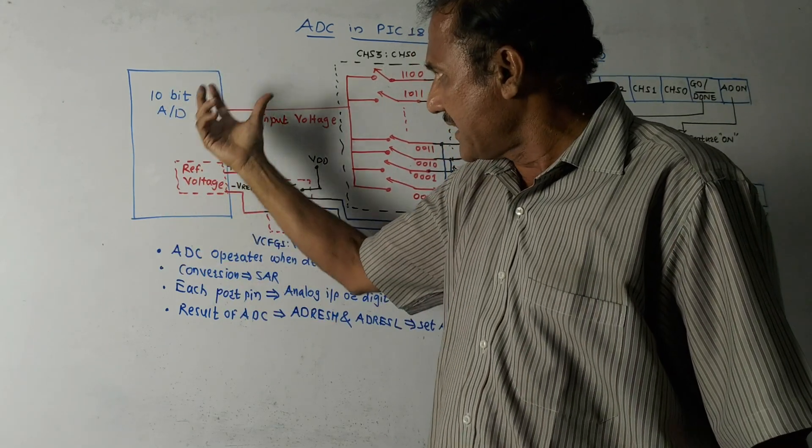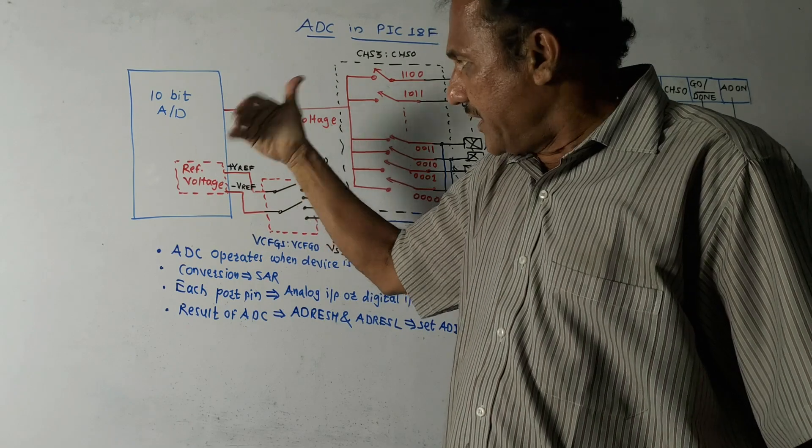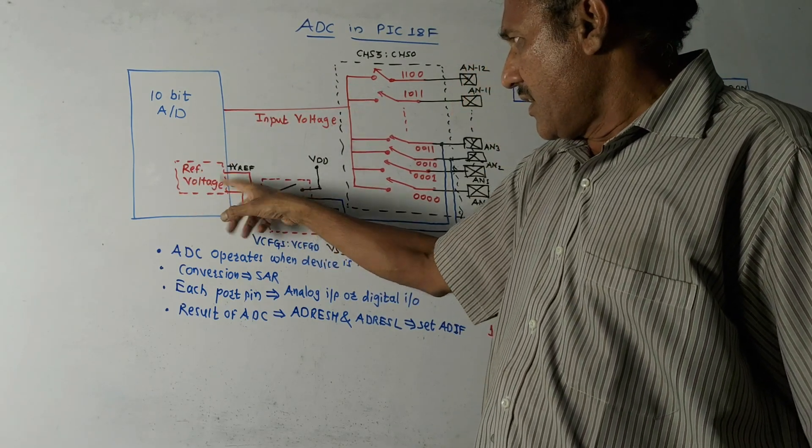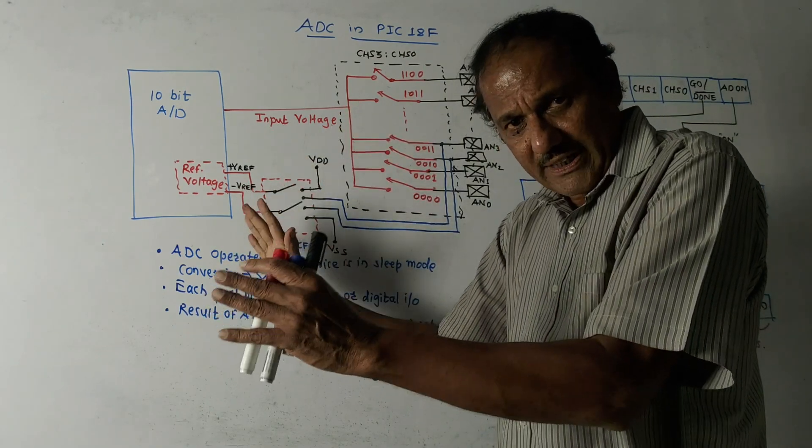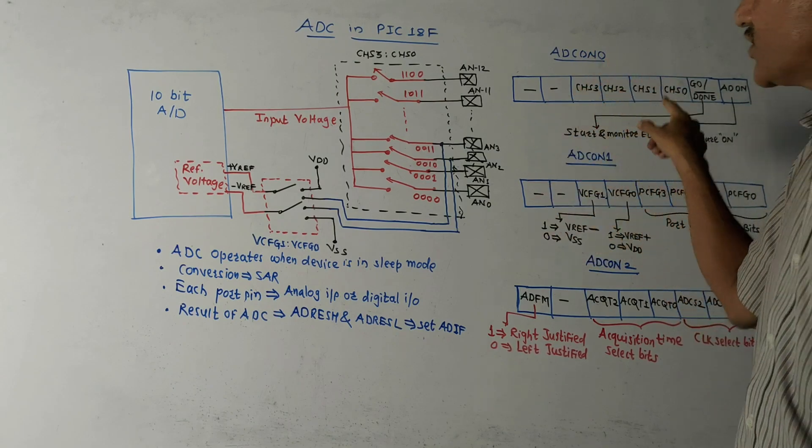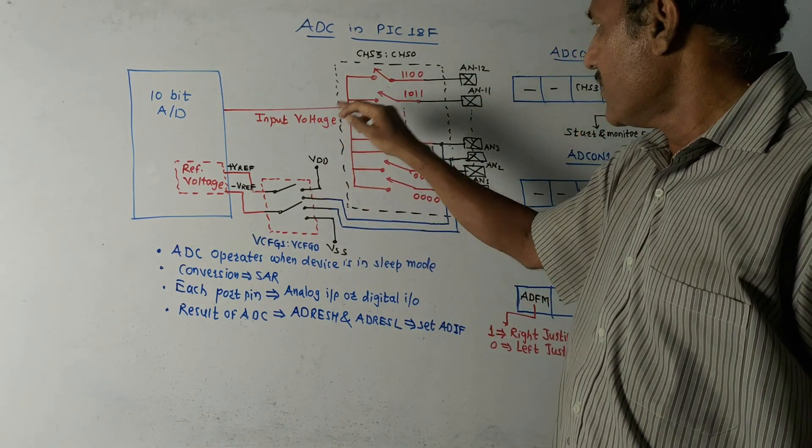This block diagram, the working of this block diagram, will be more clear after discussing the different control registers which are used in ADC. So from this point, input voltage is applied.